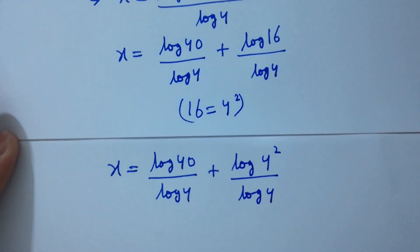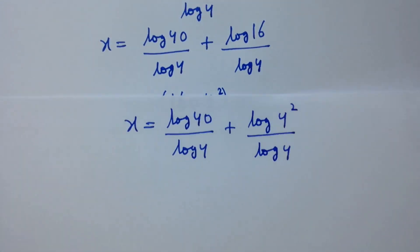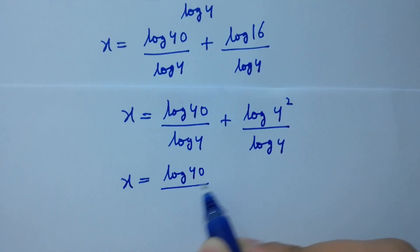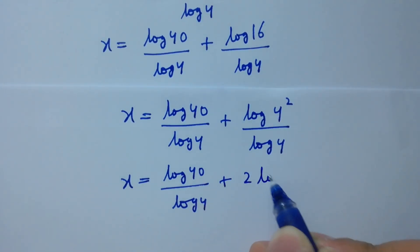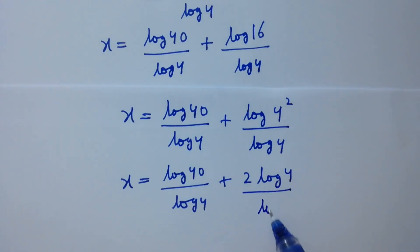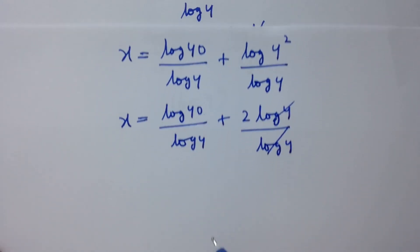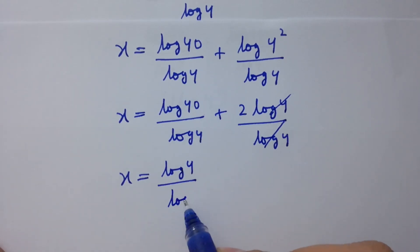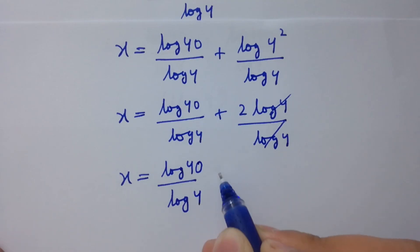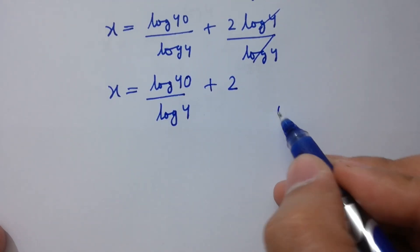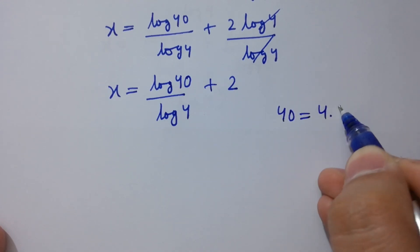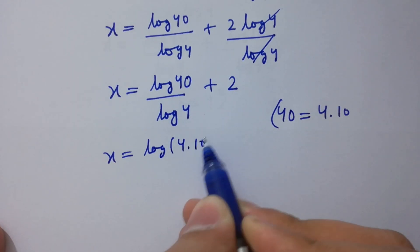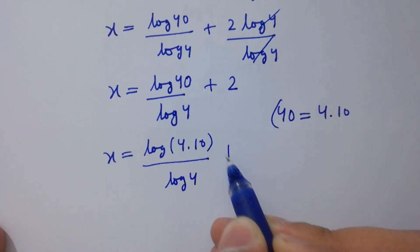So x equals log 40 over log 4 plus 2 log 4 over log 4. Log 4 and log 4 cancel, giving x equals log 40 over log 4 plus 2. Since 40 equals 4 times 10, x equals log(4 times 10) over log 4 plus 2.